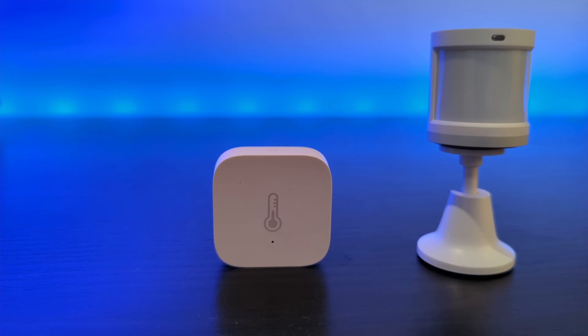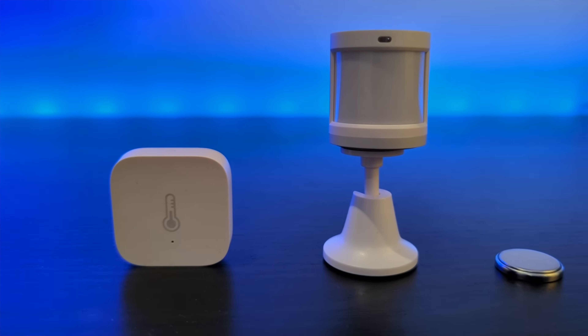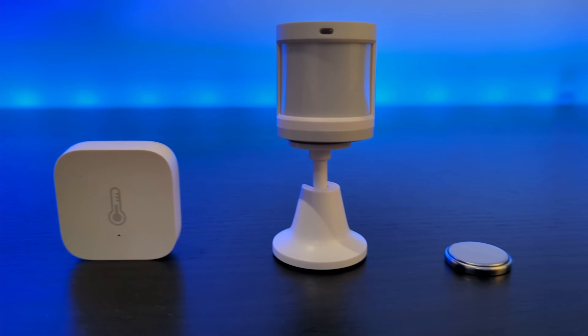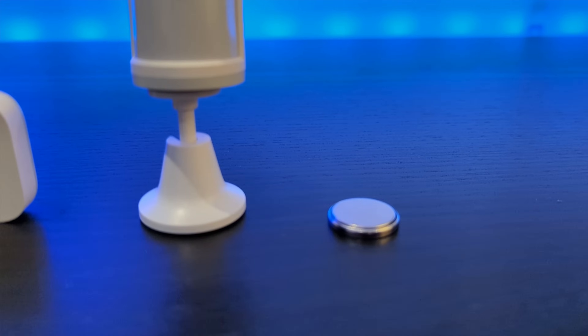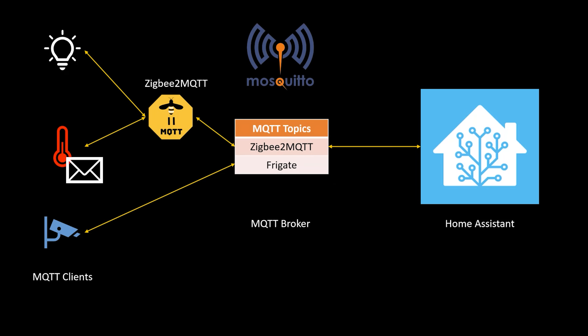These are battery-powered Zigbee temperature and motion sensors, and they can work for up to two years using a single low power CR2032 battery. These sensors simply sit around inside my house and wait for the temperature to change or for motion to be detected. They then send a small message to my Zigbee USB coordinator dongle.